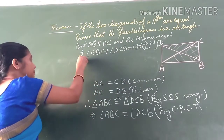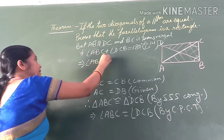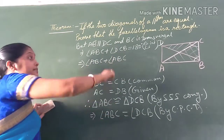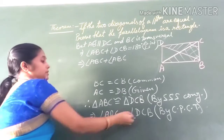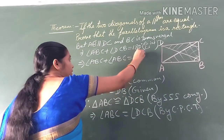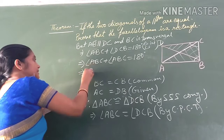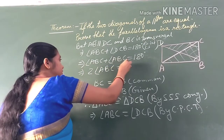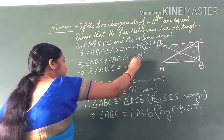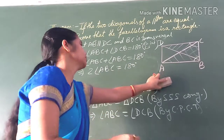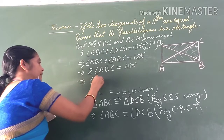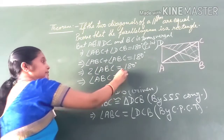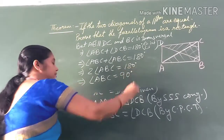Since angle ABC equals angle BCD, we can replace angle BCD by angle ABC. So angle ABC plus angle ABC equals 180 degrees. This implies twice angle ABC is equal to 180 degrees. Therefore, angle ABC is equal to 90 degrees.